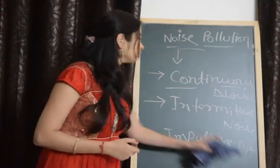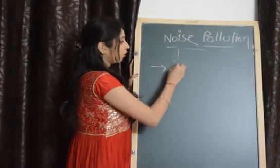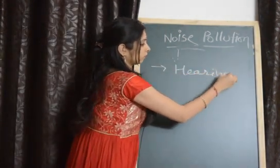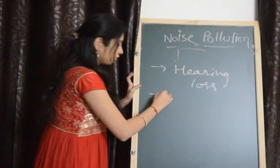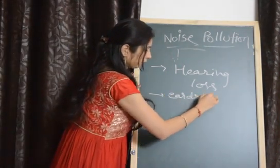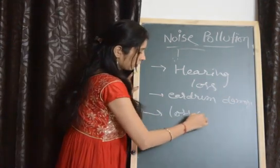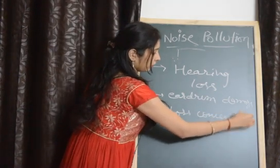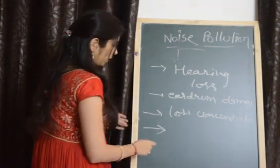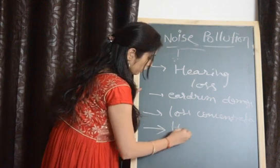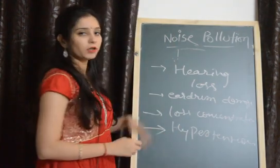What are the harmful effects of noise pollution? First, hearing loss occurs due to noise pollution. Eardrums may be damaged. Then loss of concentration occurs — many students experience loss of concentration in studies due to noise pollution. Then hypertension can occur due to high volume of noise surrounding a person.